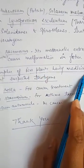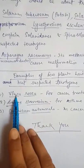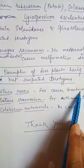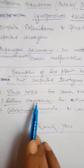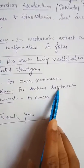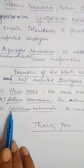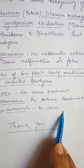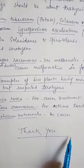Some examples of drugs with medicinal use that also have suspected teratogenicity: Vinca rosea (Sadabahar) is used for cancer treatment but has suspected teratogenicity. Datura stramonium is used for asthma treatment but also has suspected teratogenicity. Colchicum autumnale is used in the treatment of cancer and also has teratogenic concerns. That was the complete discussion about teratogens. Thank you.